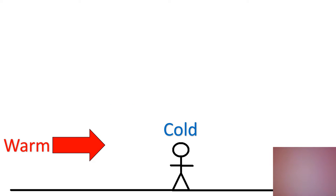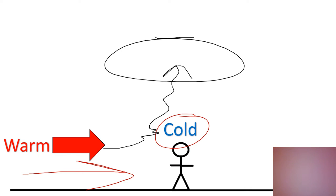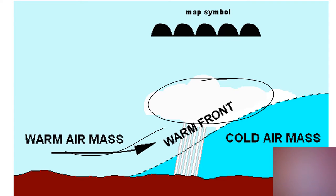A warm front is exactly the opposite. Here I've got some cold air and warm air comes in. The difference is warm air is not going to push cold air up into the sky — instead, the warm air is going to kind of mix a little bit but ultimately wind up on top. So I'm still going to get some clouds forming, but it's because the warm air has to go up and over the top of the cold air. It also mixes with the cold air, making it a little bit warmer. So warm air masses don't change weather conditions very dramatically — it's a very gradual change.